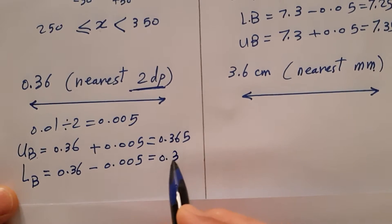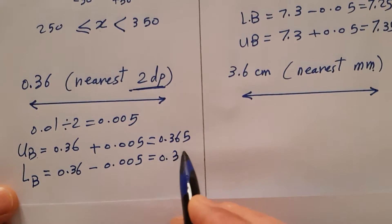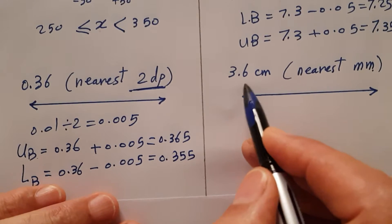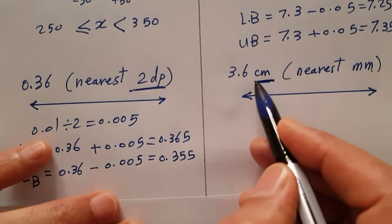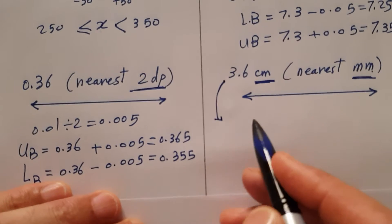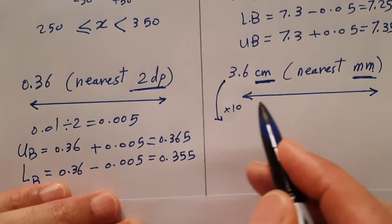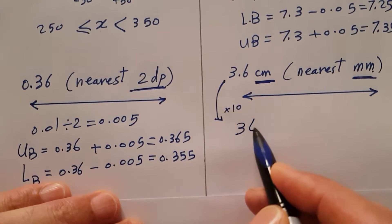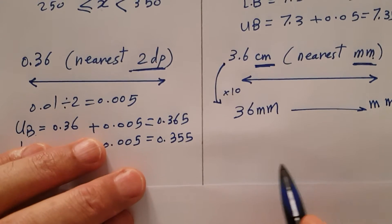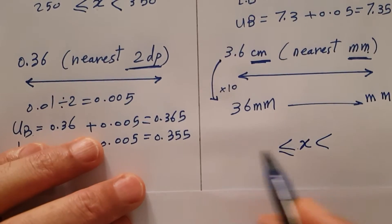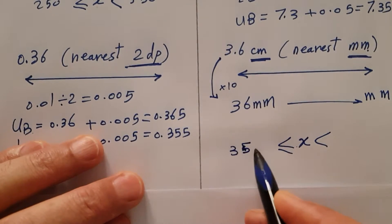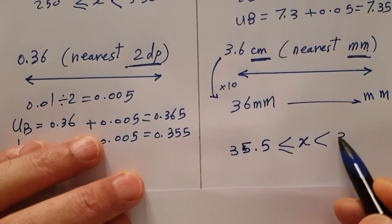You can use a calculator to subtract, or do it mentally if you are able. Now: 3.6 centimeters to the nearest millimeter. When the number is rounded to a different unit, you must convert first. Multiply by 10 — each centimeter is 10 millimeters — so 3.6 cm becomes 36 mm. Now corrected to the nearest millimeter, lower bound is 35.5 and upper bound is 36.5.